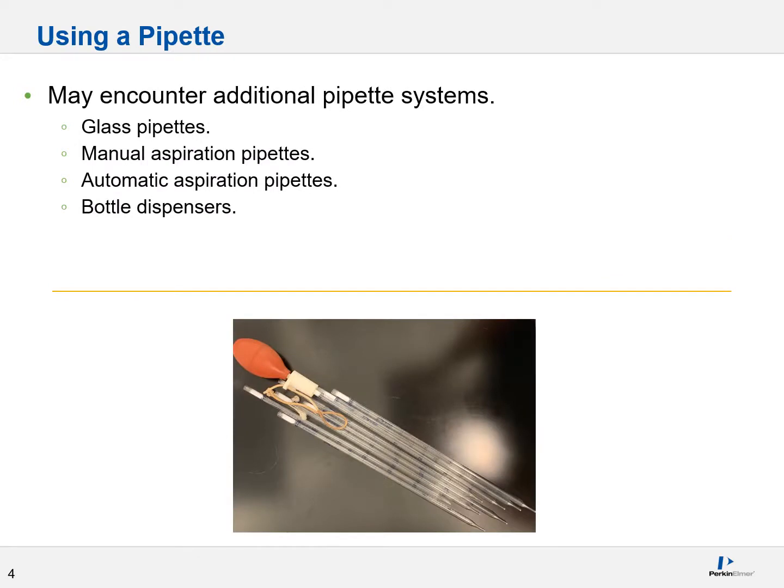You will very likely encounter additional pipette systems. These may be glass pipettes, manual aspiration pipettes, automatic aspiration pipettes where you connect an aspiration device, or bottle dispensers. They're all essentially the same system.